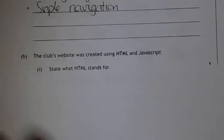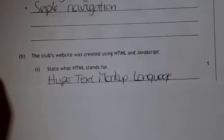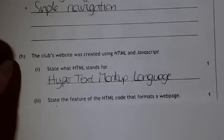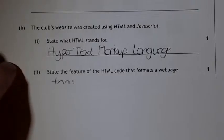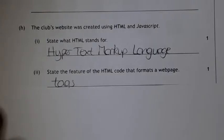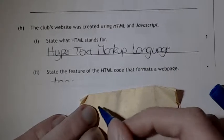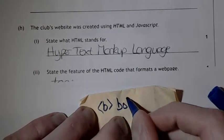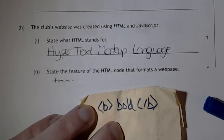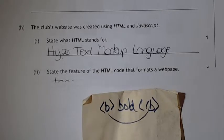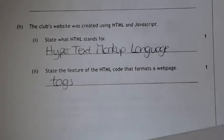The website was created using HTML — what does HTML stand for? It's Hypertext Markup Language. A feature of HTML code used to format sites is tags. For example, putting the word 'bold' inside bold tags is what makes that word bold. It has a start tag and an end tag. And that is the end of question 12.